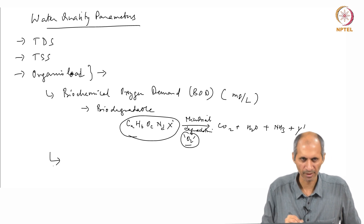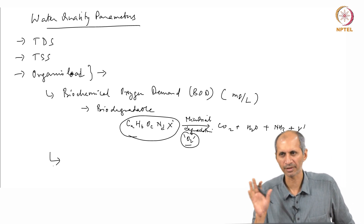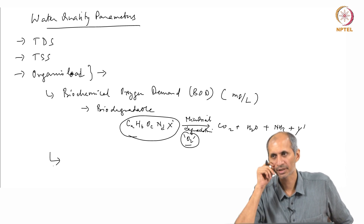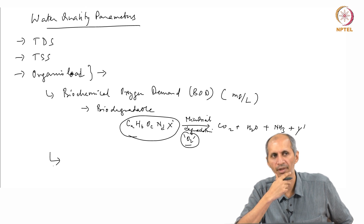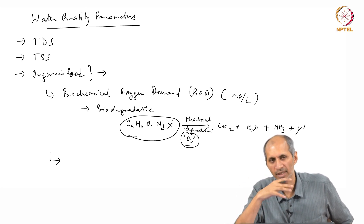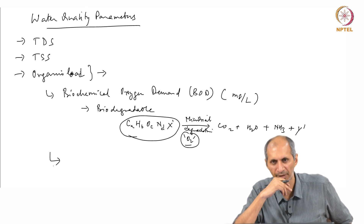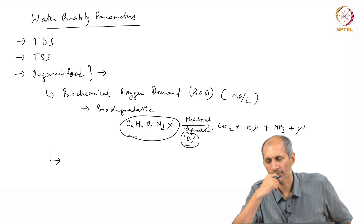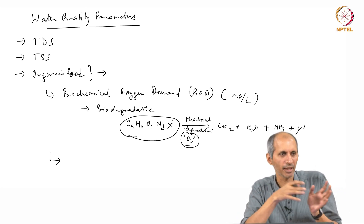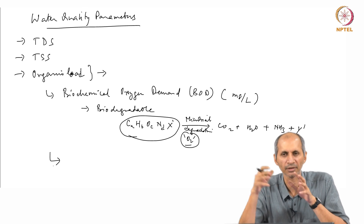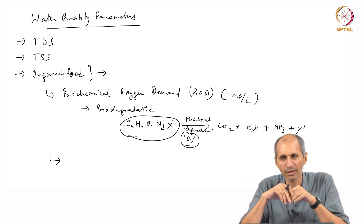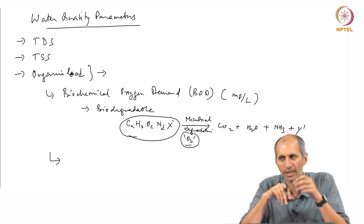The problem with BOD is that it works very well if your waste is biodegradable, but industrial waste is not always biodegradable. Many industrial effluents are not biodegradable because some of these chemicals are designed not to degrade — one of the objectives of many manufacturers is that the product should last long and not expire quickly.